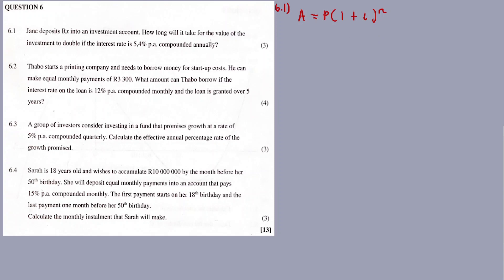So some formulas — the compound formula. There's no compounding period, basically — it's compounded annually. If ever you were taught the formula with a compounding period, there's no compounding period for this question. So the accumulated amount is 2x, equal to the principal amount x.